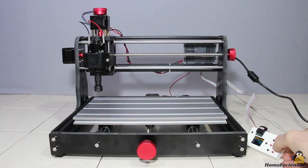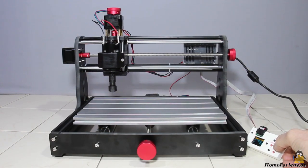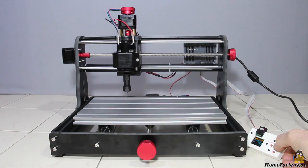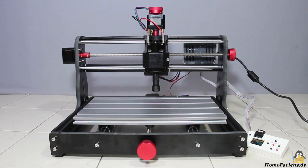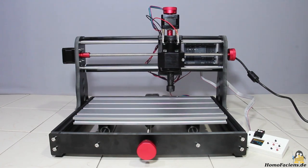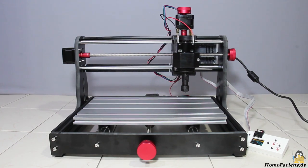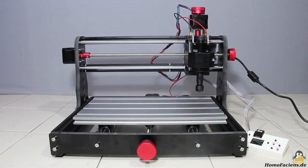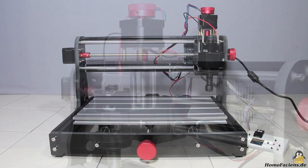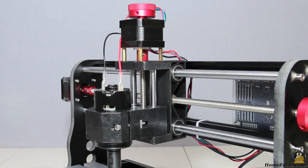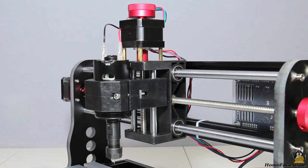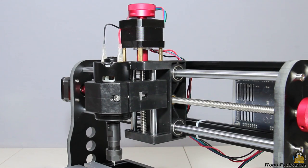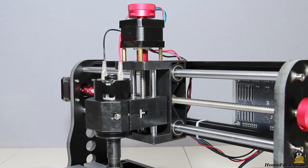The X and Z axis work with the same principle. The X axis moves up to 30cm to the left or right. This axis is also guided along 10mm round rods. 8mm rods are used for the Z axis as this only moves a little more than 4cm up or down.